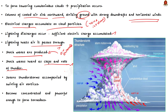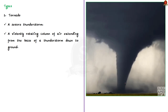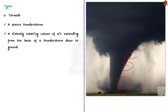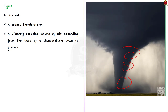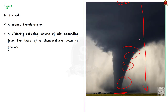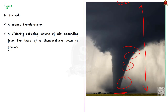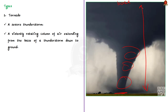In addition to lightning and thunder, sometimes severe thunderstorms are accompanied by swirling vortices of air that become so concentrated and powerful that they end up forming tornadoes. A tornado is a violent, rotating column of air extending from the base of the thunderstorm down to the earth's surface. These are the basics about thunderstorms. Now let us see the types of thunderstorms.